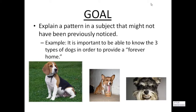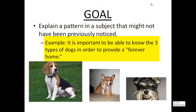The goal of classification is to explain a pattern in a subject that might not have been previously noticed. For example, it is important to be able to know the three types of dogs in order to provide a forever home.